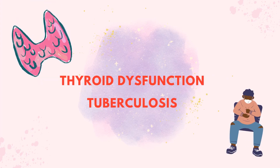In general diseases, thyroid dysfunction is another major cause. Both hypo- and hyperthyroidism cause menorrhagia in the initial stages. Tuberculosis may also cause menorrhagia initially, but in advanced stages amenorrhea occurs.